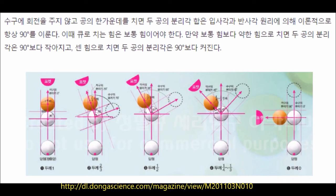아래쪽 수구가 주황색 적구와 충돌한 순간을 나타냅니다. 포켓볼에서 주황색 적구를 포켓에 넣기 위해 필요한 이론입니다. 정면을 맞추면 분리각은 0도, 완벽하게 스치고 지나가면 분리각은 90도가 됩니다. 두께가 1/2일 경우, 충돌 후 수구의 분리각은 60도, 적구의 분리각은 30도가 되어 합이 90도가 됩니다.